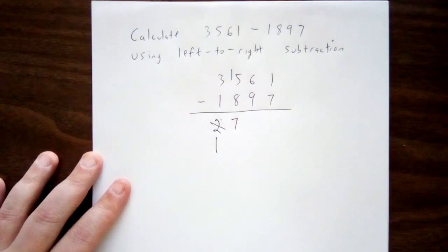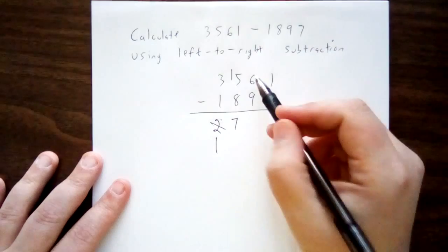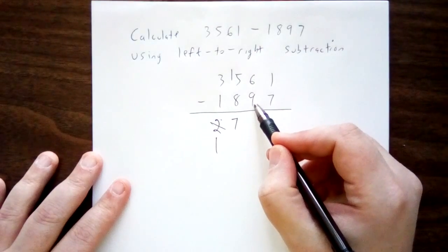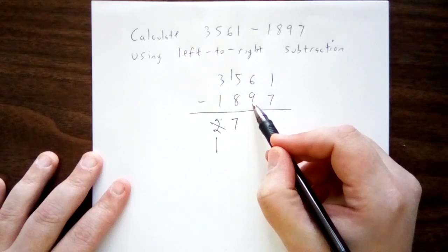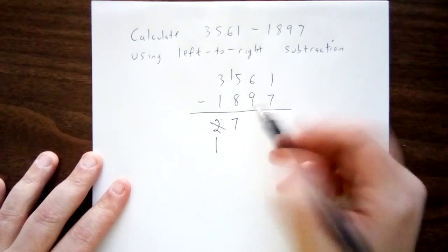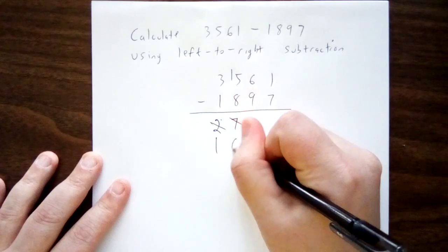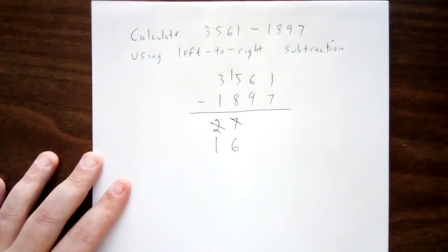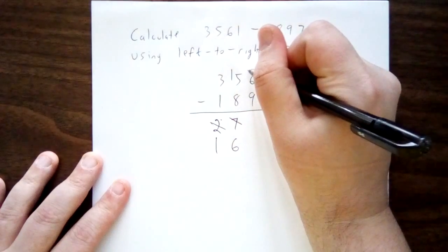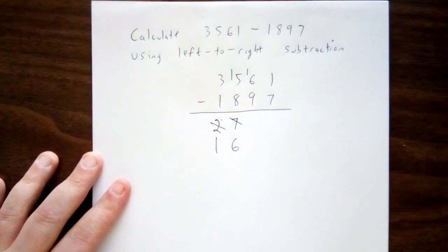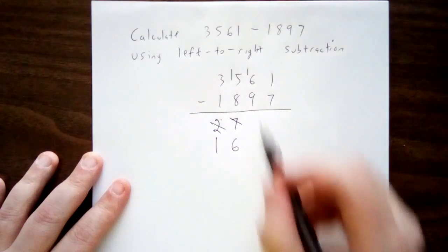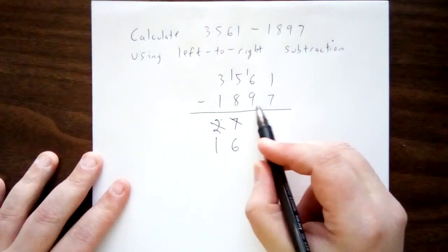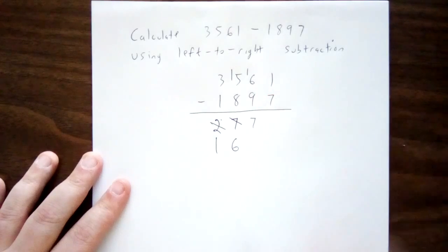I continue in the same way for the rest of the places. 60 minus 90, I can't calculate that yet. So I'll need to borrow from the 7 hundreds that I have left over. I'll take 1 of those hundreds away. That gives me 10 tens. So now I've got 16 tens in total. 16 tens, removing 9 of them, leaves 7 of them behind.